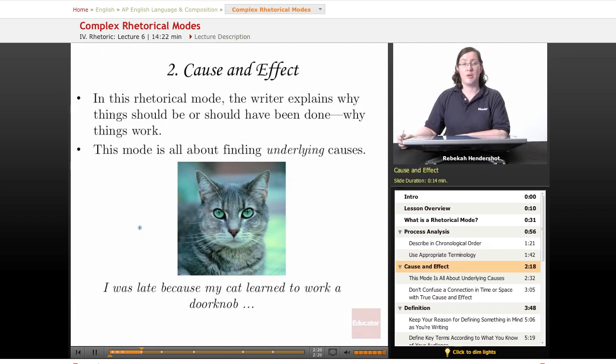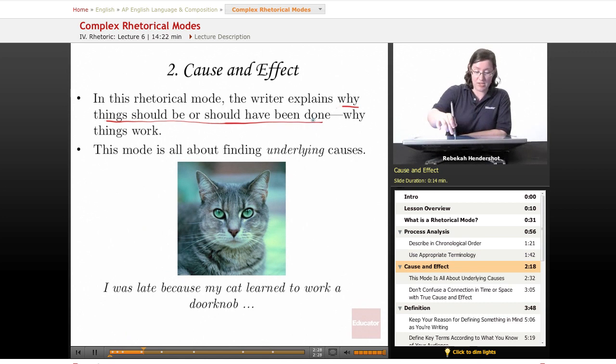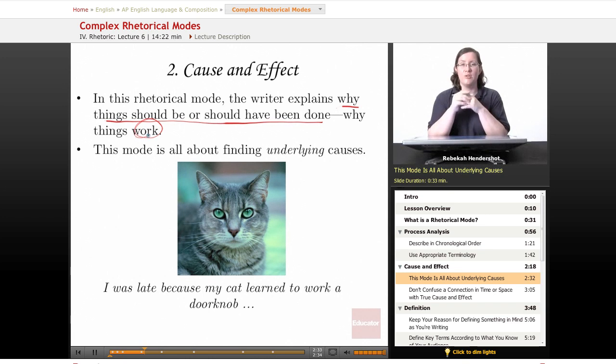The second complex rhetorical mode is cause and effect. You're probably really familiar with this one. In this mode, the writer explains why things should be or should have been done, why things work. This mode is all about finding underlying causes.